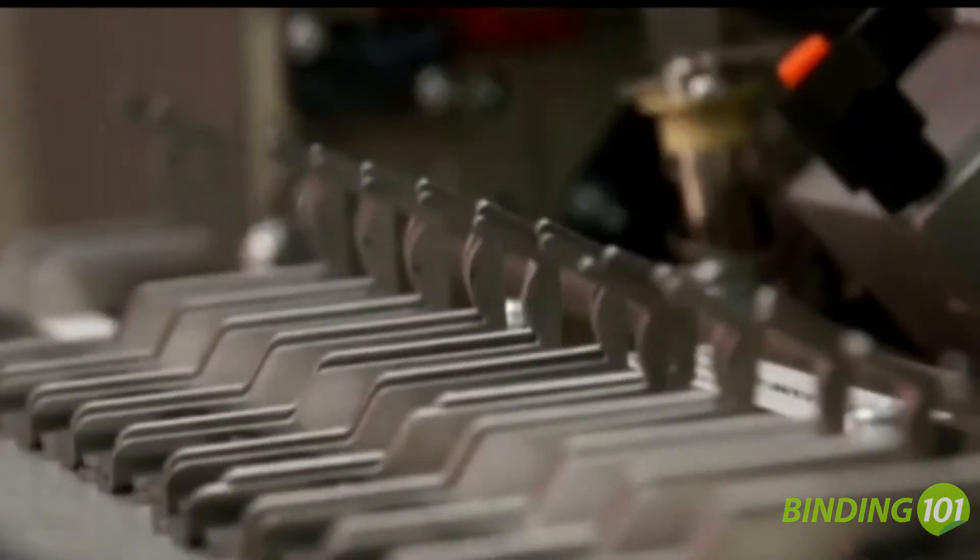The Coilmatic comes complete with a set of 13 spine formers, conveniently stored inside the front panel of the machine that can handle coil diameters from 8 to 20 millimeters. That will handle books up to 5 eighths of an inch in thickness.